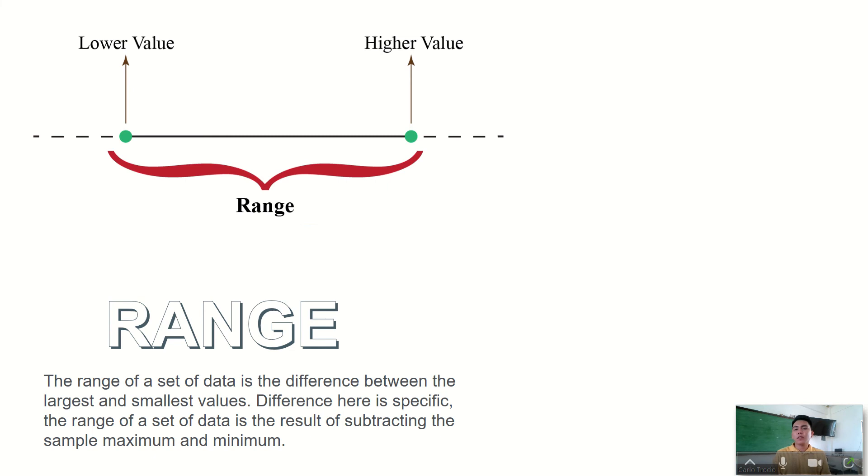The first type or kind of measure of dispersion is what we call the range. This is the simplest one. For example, you are watching a music video of Justin Bieber. The duration for that is more or less 3 minutes. So that is what we call the range, from the end to the beginning, or from lower value to higher value.